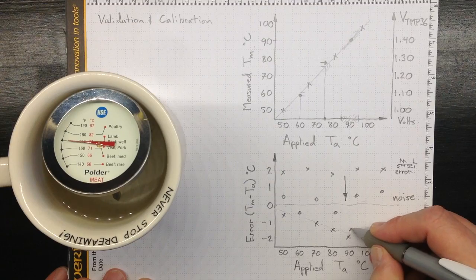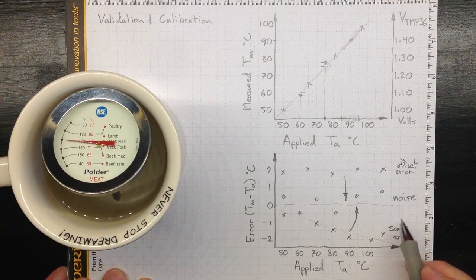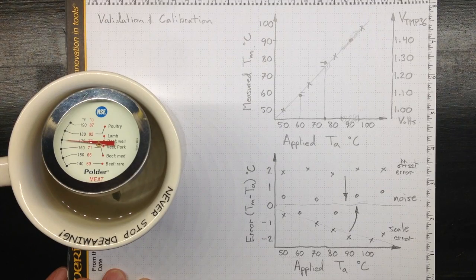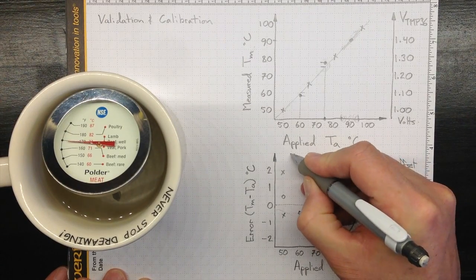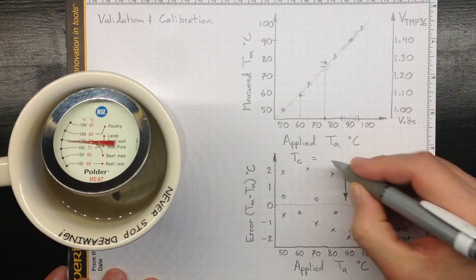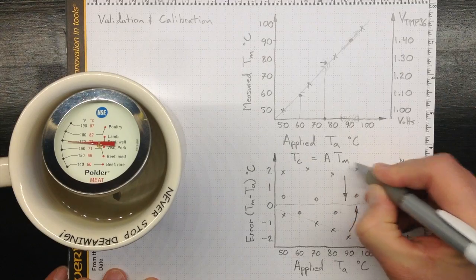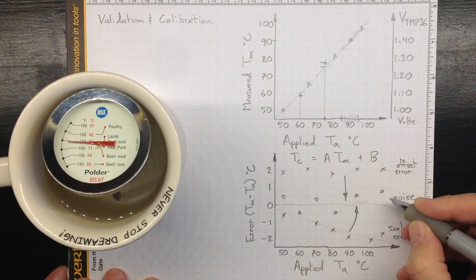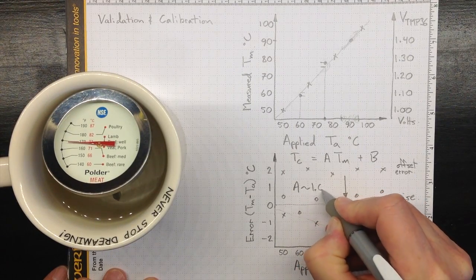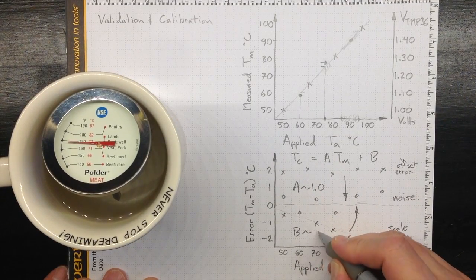And we can adjust that to swing that line back up here, closer to the zero line. So, if we wanted to have a calibrated temperature, if we wanted to make the best estimate of temperature that we could, we could take Tc, corrected or calibrated temperature, equal to some value A times the measured temperature plus some value B. A really should be close to one, and B really should be close to zero.